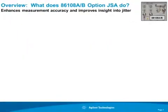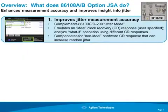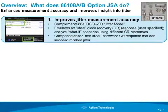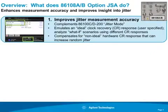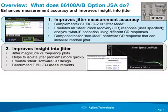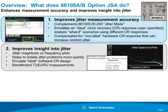Let's have a look at what Option JSA does. The first thing it does is allow the DCA to improve its jitter measurement accuracy. Any design implemented in hardware will have limitations and some non-ideal behavior. Option JSA characterizes the hardware clock recovery response and allows the DCA to emulate an ideal or software clock recovery response. Option JSA also improves insight into jitter by providing jitter magnitude versus frequency plots, which helps designers isolate jitter problems more quickly.